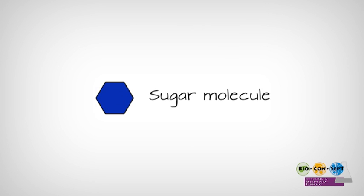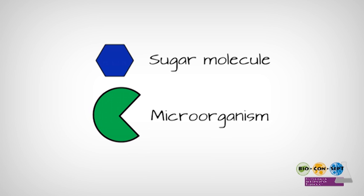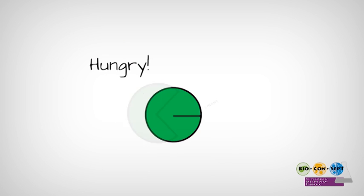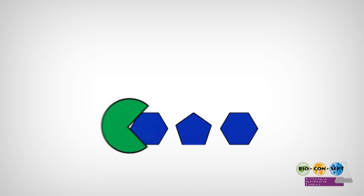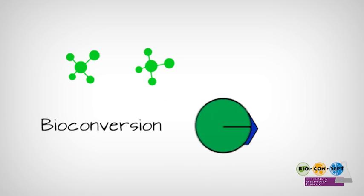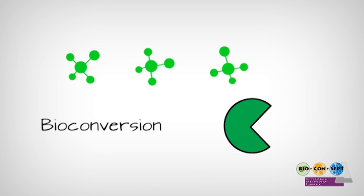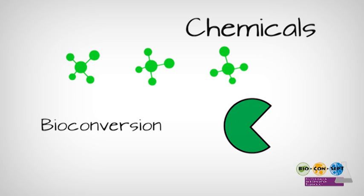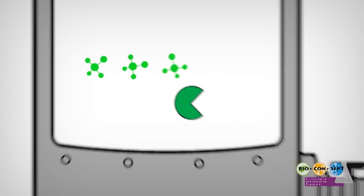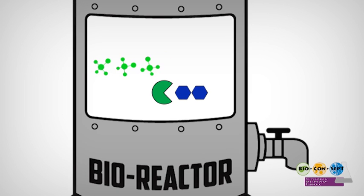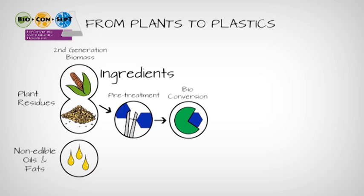The next step is bioconversion. The microorganisms are hungry and they like sugar molecules. What happens? The bioconversion takes place inside the microorganism, resulting in chemicals — and these are the chemicals we need for bioplastics production. All these reactions happen in a small bioreactor in the lab. The bioconversion of plant residues into chemicals is now complete.